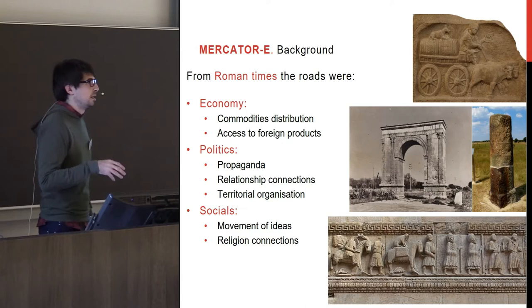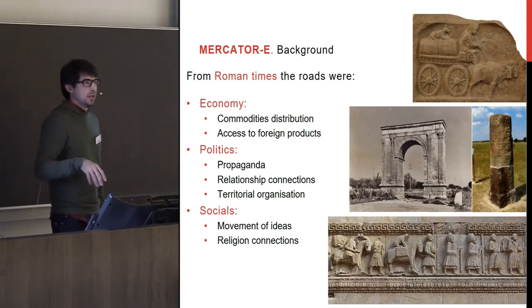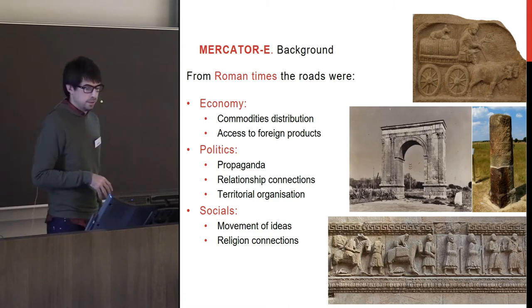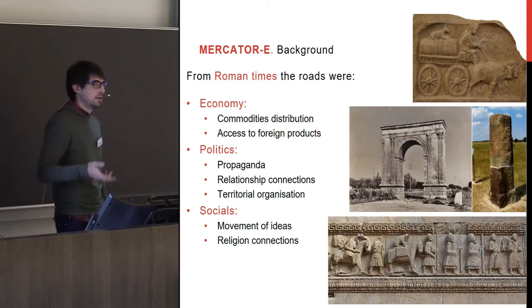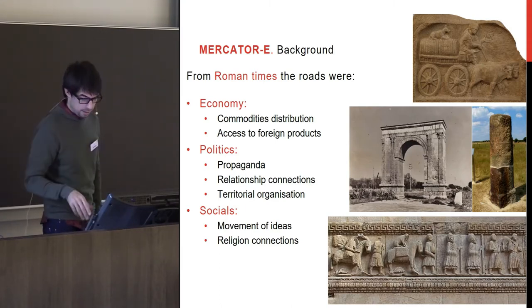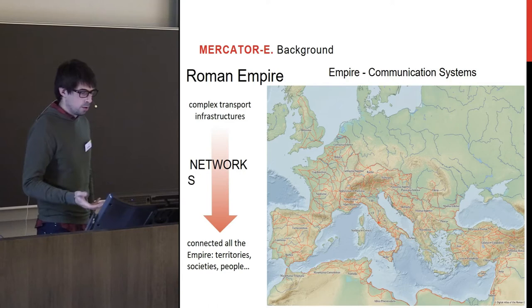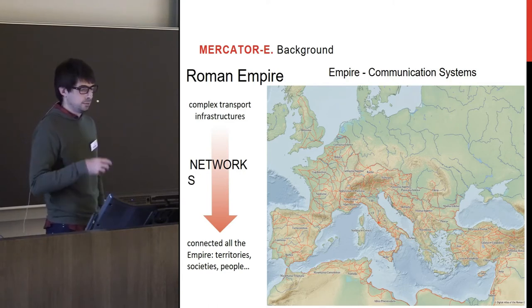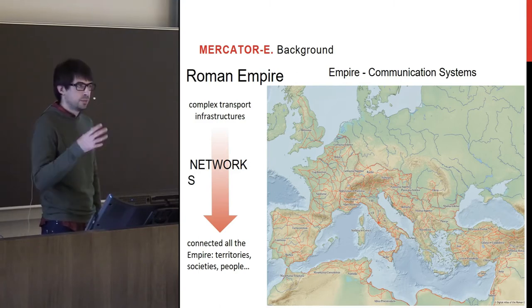Roads showed people the wellness of being connected to Rome. They also meant a great deal for territorial organization — when Romans arrived somewhere, they built a new communication system. Roads had a social impact too, because people, ideas, and religion moved and got connected through them. The Roman Empire built a very complex transportation system that connected territories, people, and society.